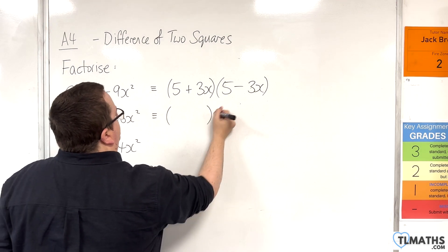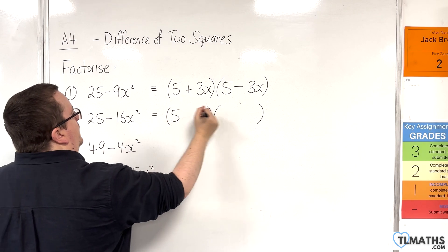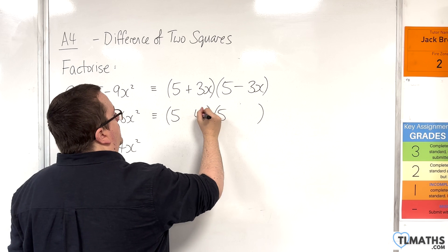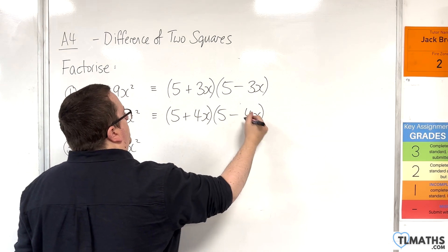Number 2. The square root of 25 is 5, that goes in first. The square root of 16x squared is 4x. One's a plus, one's a minus.